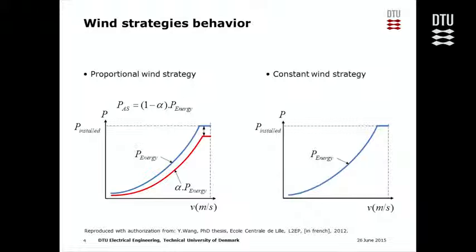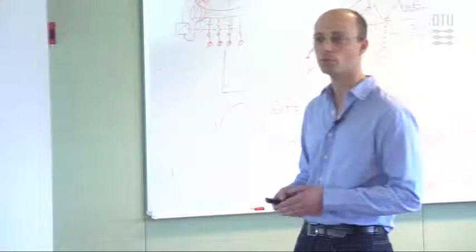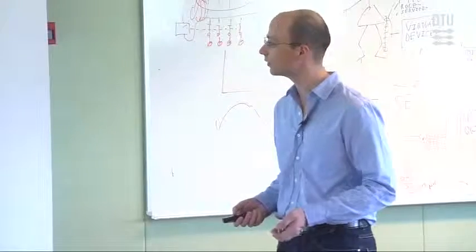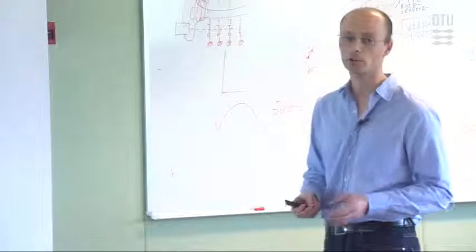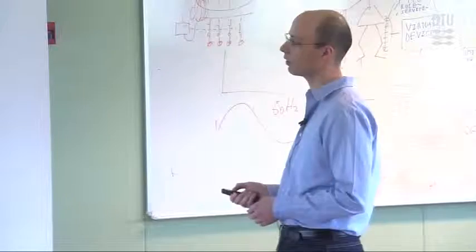The other strategy is the constant strategy. Again, the blue curve corresponds to the wind available power, while the red curve now represents the behavior of this strategy. This strategy fixes a certain amount of power for participating in the primary reserve market, while the remaining amount of power is submitted to the energy market. This strategy only works with power above a certain amount of the installed power.